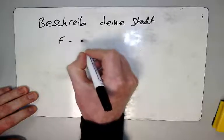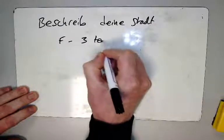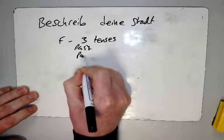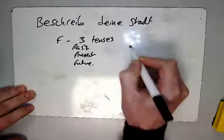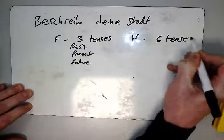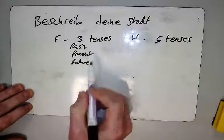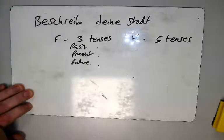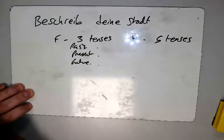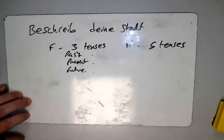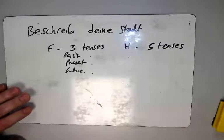On the foundation paper, we need to be looking at three tenses: past, present, and future. On the higher, you need about five tenses and more complex language. So you'd include those three, and then also the conditional, the pluperfect, the imperfect as well as the perfect. Think about how you'd include those within your response.